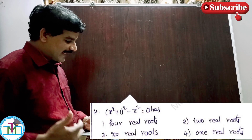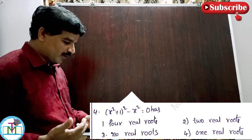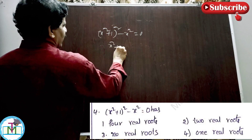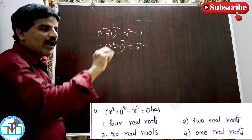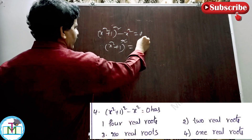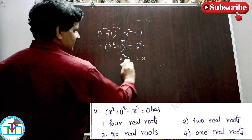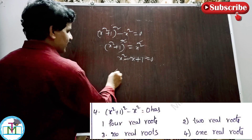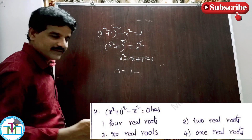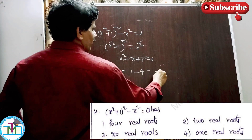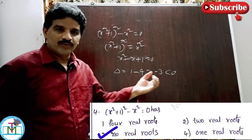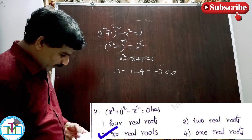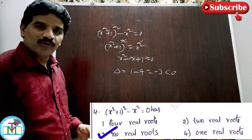Question number 4: (x² + 1)² - x² = 0 has how many real roots? This implies (x² + 1)² = x². Taking square root on both sides: x² + 1 = x, so x² - x + 1 = 0. Computing the discriminant: b² - 4ac = (-1)² - 4(1)(1) = 1 - 4 = -3, which is less than 0. Since discriminant is negative, the roots are imaginary — no real roots. Option 3 is the right answer.